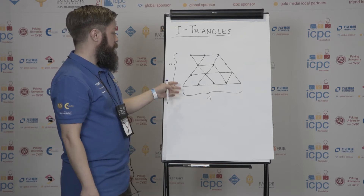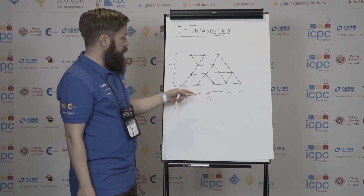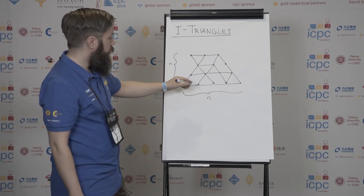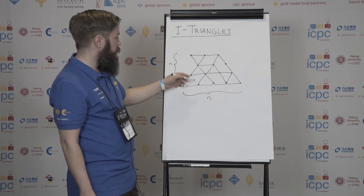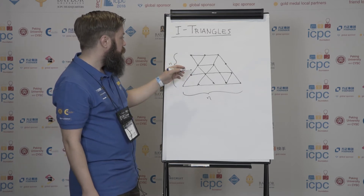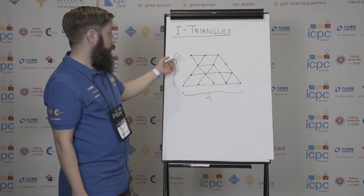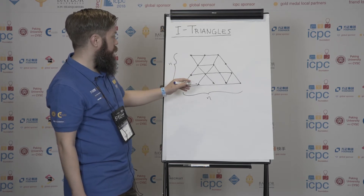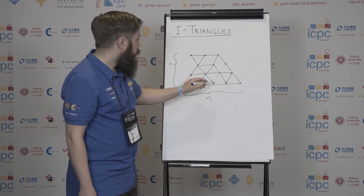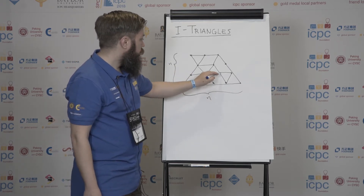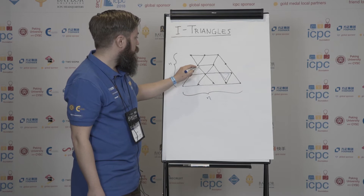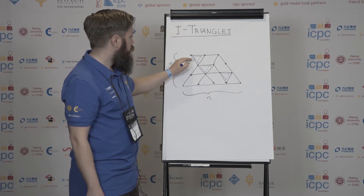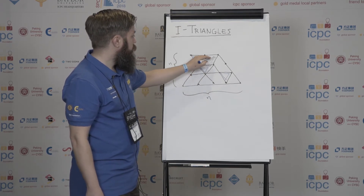For simplicity, let's say the dimensions of the grid are n by n. In this example, you can find four triangles pointing downwards if you look carefully: this one, this one, this one, and then this big one.